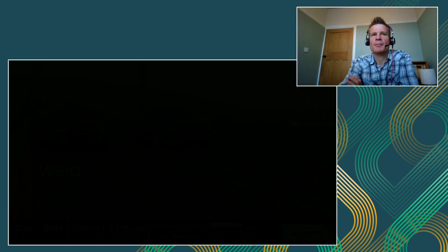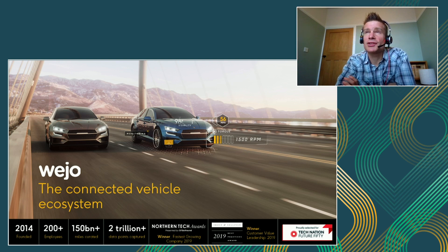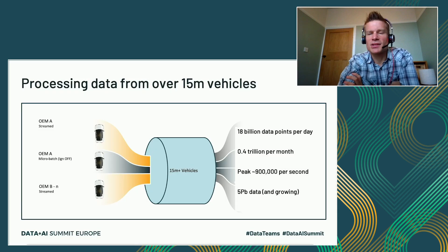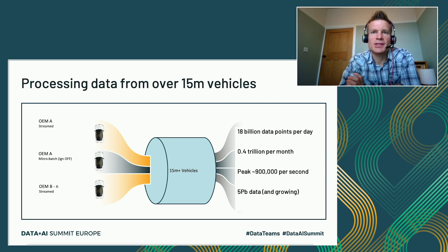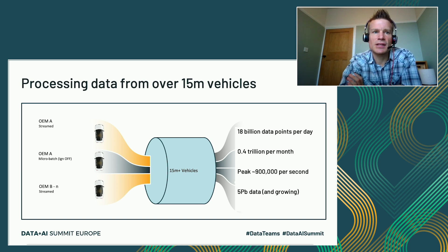Wejo has the largest data asset of connected vehicle data. We're currently consuming data from upwards of 15 million devices, and we have petabytes worth of historical data about where those devices have been. One of Wejo's main focuses around data for good is how we can use this connected car data to improve safety, reduce traffic, look at things like mobility intelligence and weather. We work with retail customers and universities, consuming data from OEMs in both stream and batch, and producing derived data insights and machine learning.